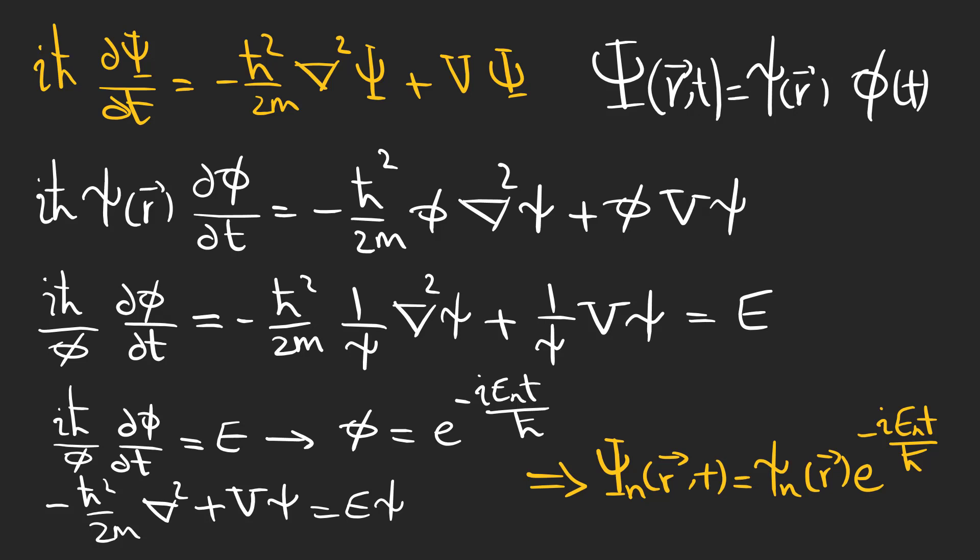Finally, the wave function for each different energy can be expressed as a time-independent wave function multiplied by an exponential, which depends on time. Pay attention that in this process, we have assumed that the potential energy is time-independent.